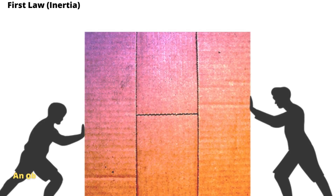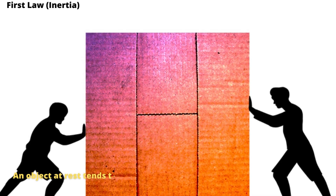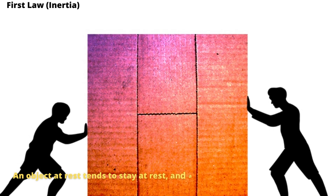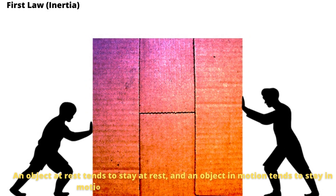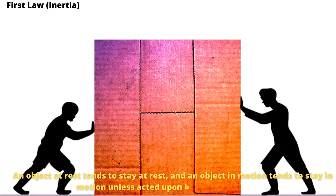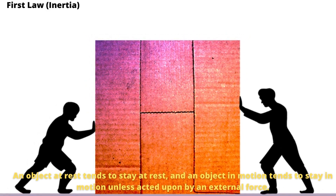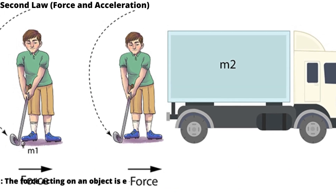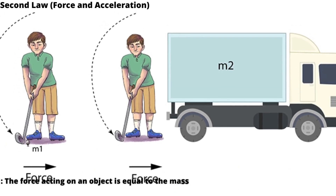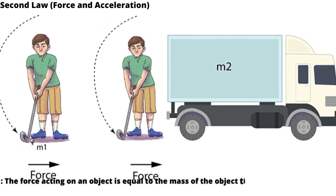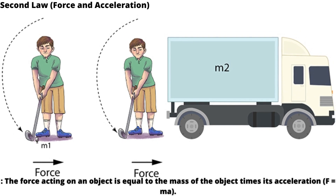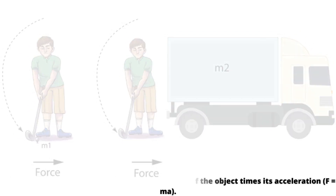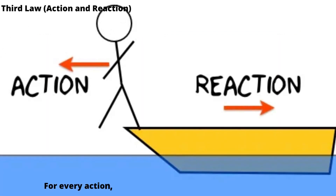First law: inertia. An object at rest tends to stay at rest, and an object in motion tends to stay in motion, unless acted upon by an external force. Second law: force and acceleration. The force acting on an object is equal to the mass of the object times its acceleration — F equals ma.